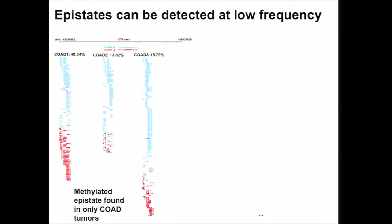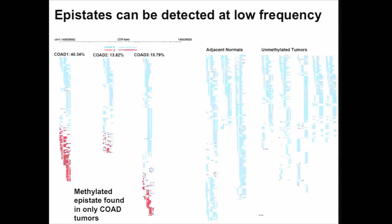One of the advantages of our method is we can detect epistates at very low frequencies. Here is one example: we infer two epistates at a locus only methylated in the colon samples. One colon sample has 40% methylated epistate, but the two other samples have very low frequencies — only 13% and 15% methylated epistate — with almost no methylated epistate found in normals or other tumor types.